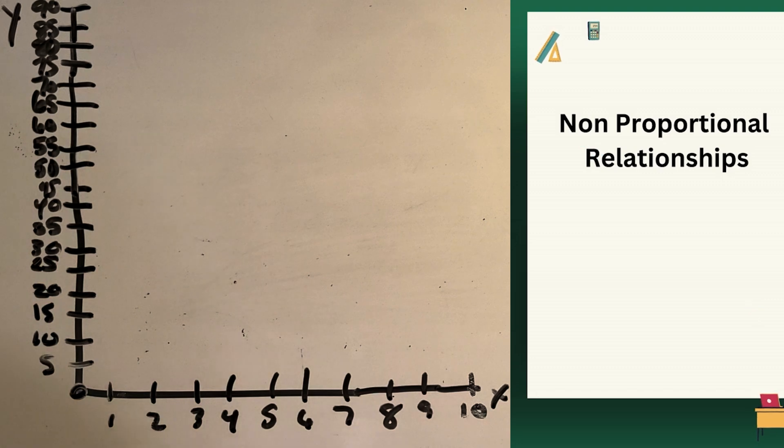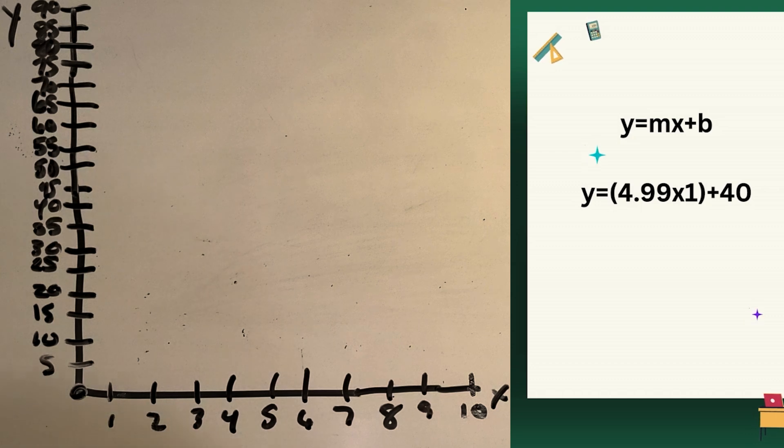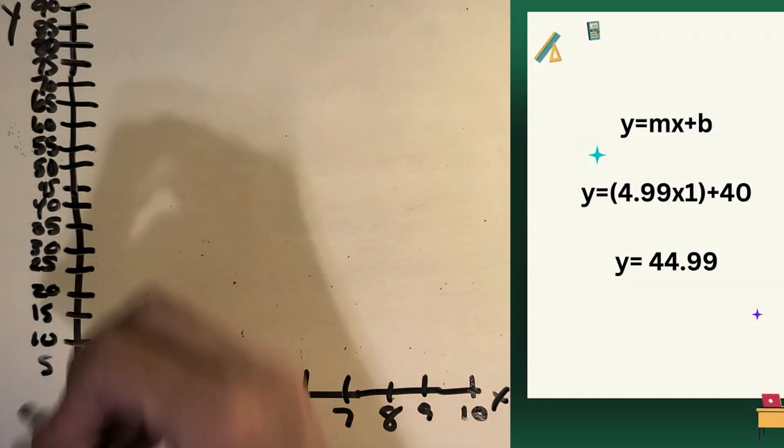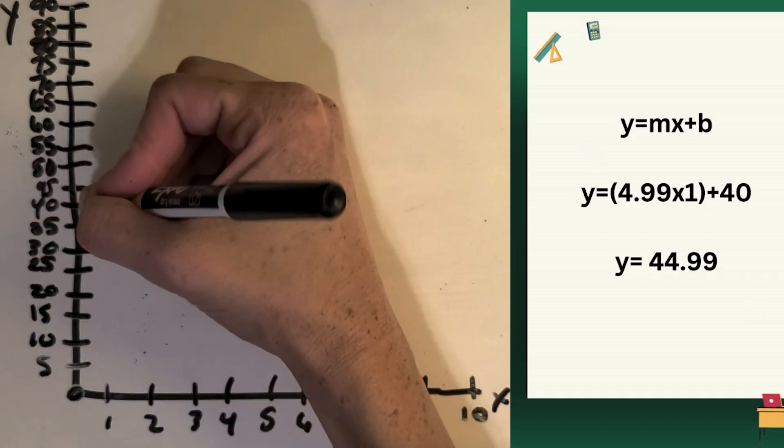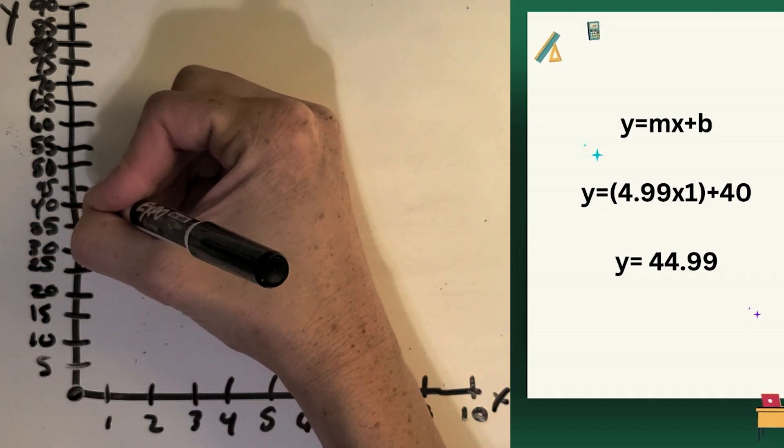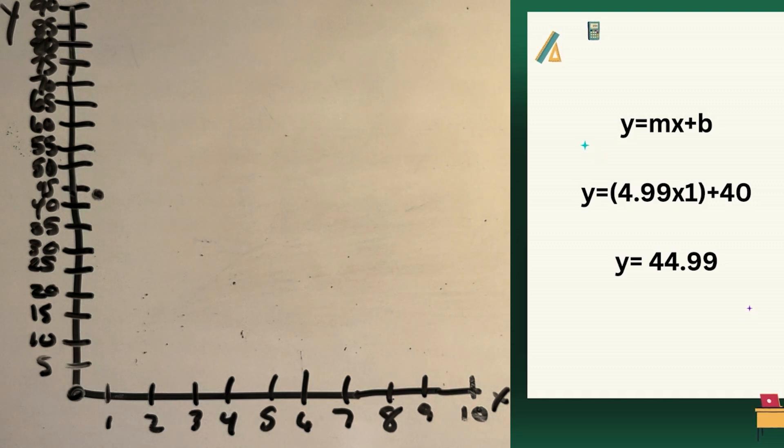Okay, so now I think we're ready to make a connection between those equations that we just built and solved and graphs. So take a look at that first equation. We know that 4.99 times 1 plus the 40 is $44.99. So that answer is our y coordinate. So we're going to put a point on the graph. So here is one DLC and the cost is $44.99. So that's where our point goes on this graph.